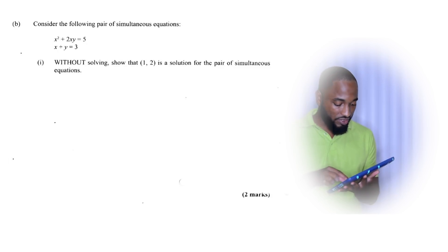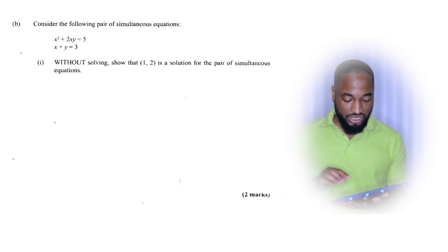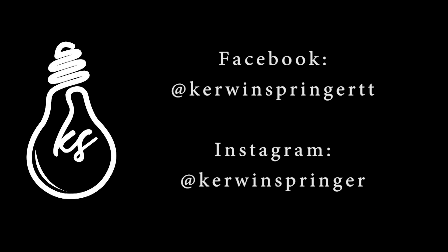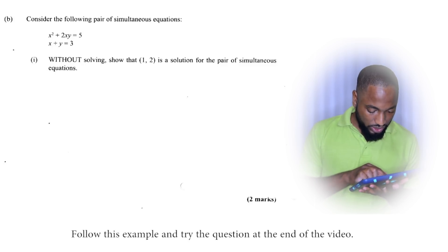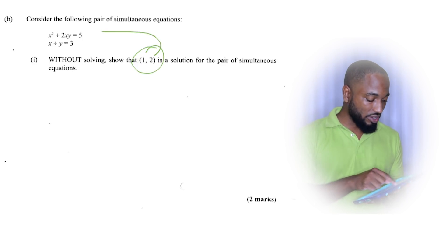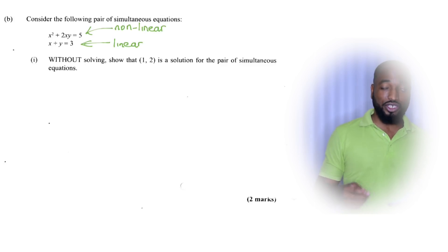When solving simultaneous equations where one equation is nonlinear, you need to substitute the linear equation into the nonlinear one. But before we do that, they want us to do a little trick here: without solving, show that (1,2) is a solution. To do this, substitute these values into both equations and verify it satisfies both. That's just some substitution to collect two marks before we do the actual thing. You should know which equation is the linear equation and which is the non-linear equation.